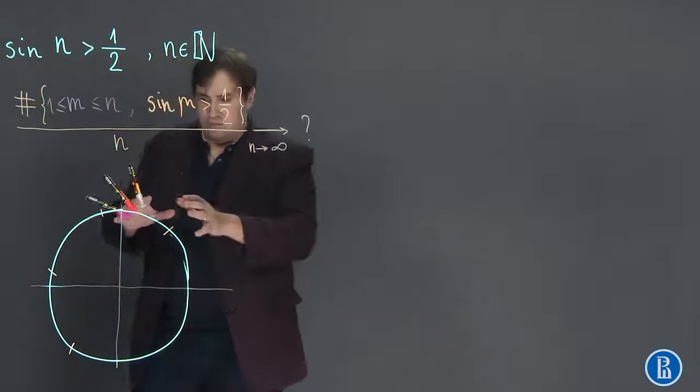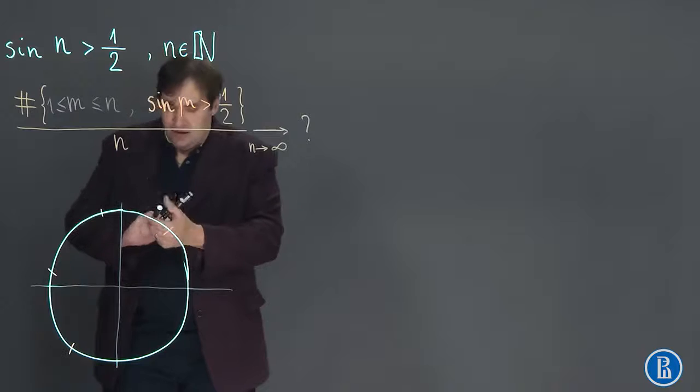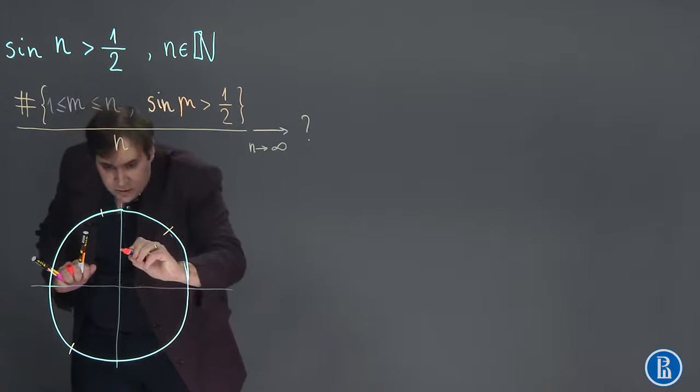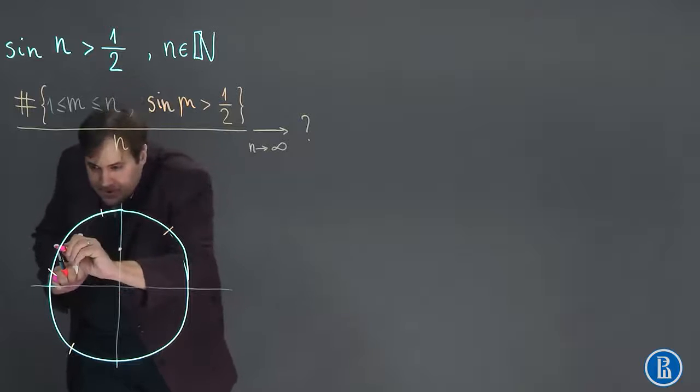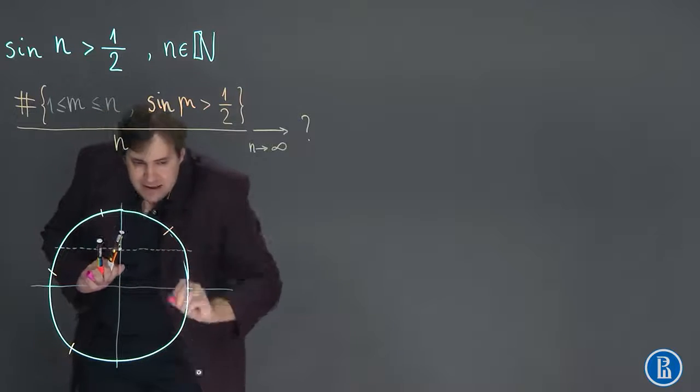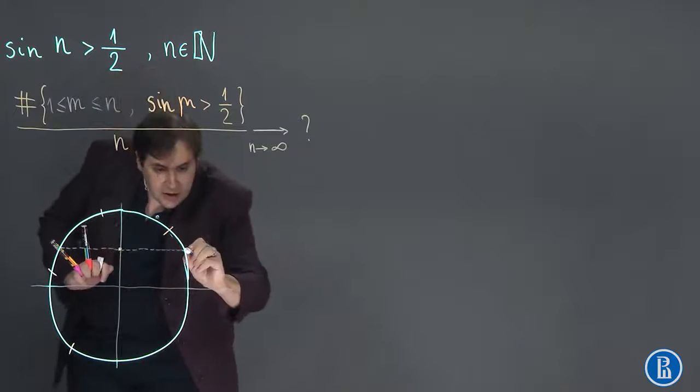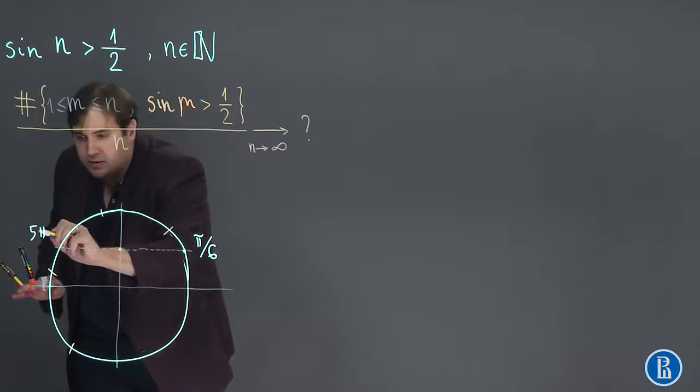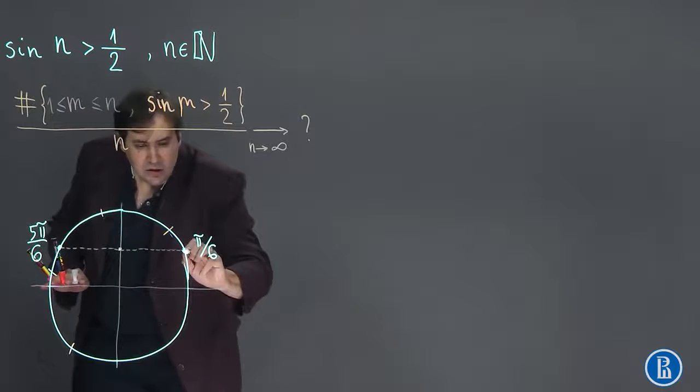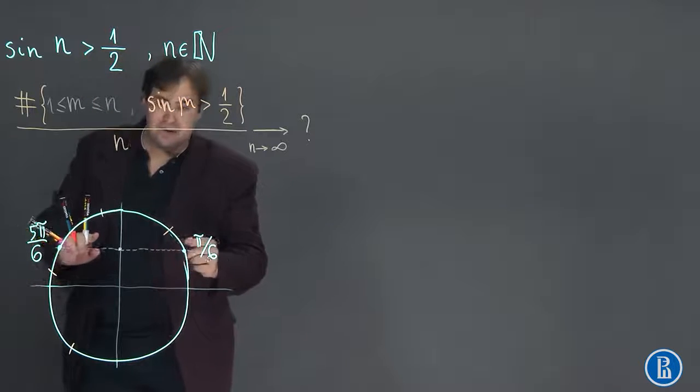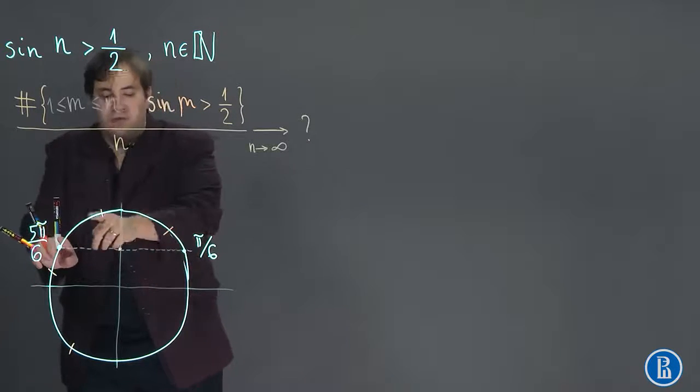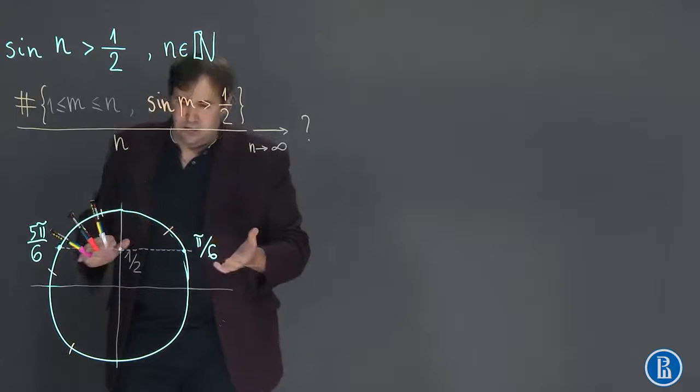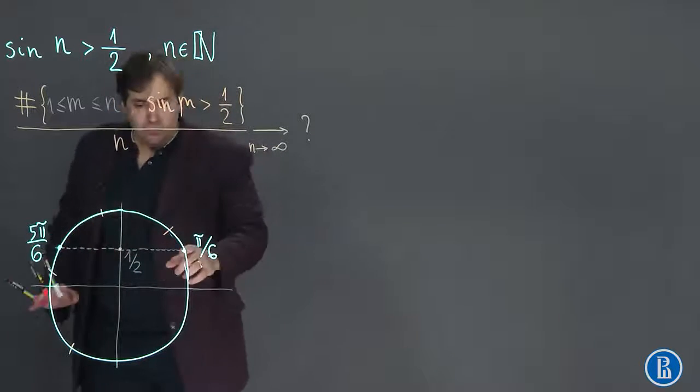The set of those points on the circle where sine is greater than one-half forms an interval from over here. Sine equal to one-half is somewhere here. Then we find the corresponding points on the circle: it's π/6 and 5π/6. So sine is greater than one half if the point on the circle is somewhere on the top of the circle between these two points.